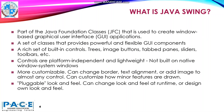The controls provided by Java Swing are platform-independent and lightweight, because they are not built on the native window system. They are more customizable — you can change the border, text alignment, or add image to almost any control. They can customize how minor features are drawn. They provide pluggable look and feel, and the look and feel can be changed at runtime, or your own look and feel may be designed.